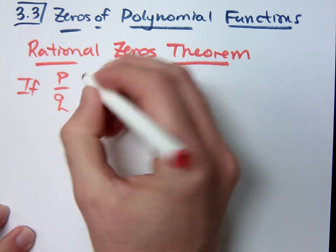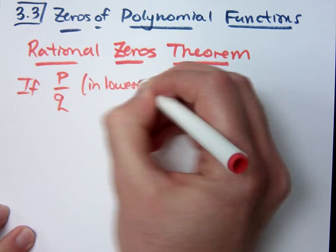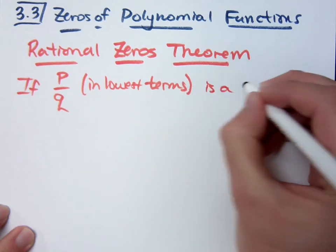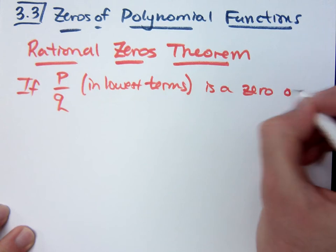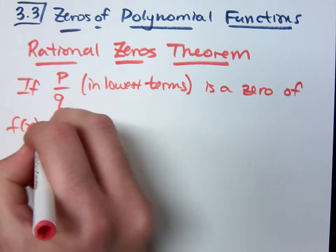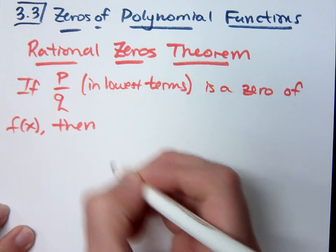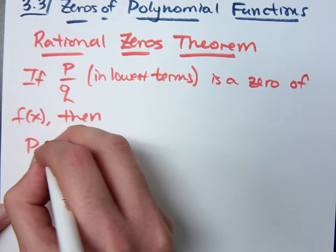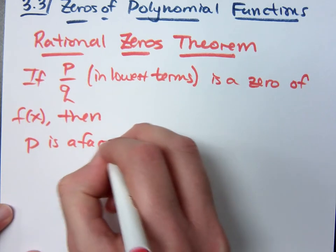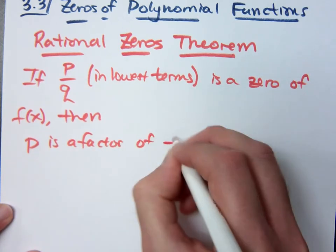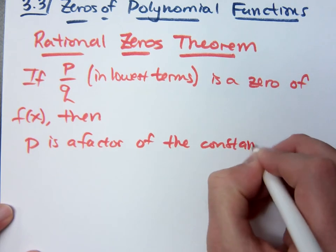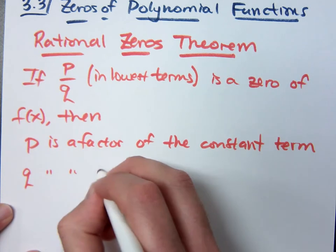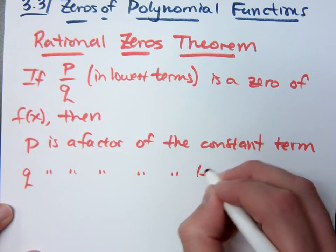If P over Q, of course this guy is in lowest terms, if P over Q is a zero of your function f of x, then this is where the P and the Q come from.